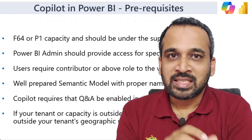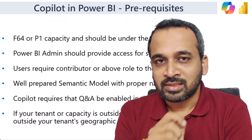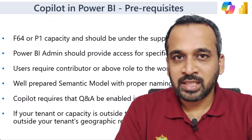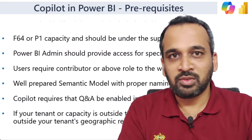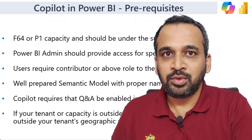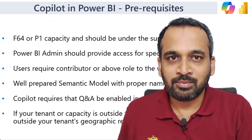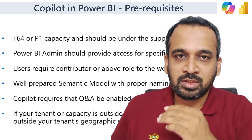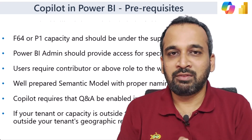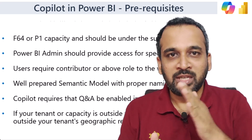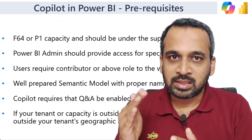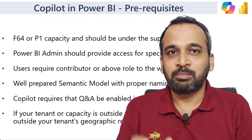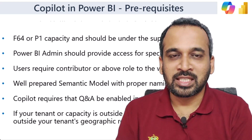There are some important prerequisites to know. The first is the F64 license. Microsoft is stopping the P-series licenses like P1 and P2. If you already have those on a long-term contract, it will continue. Otherwise, you need at least F64 to get started with Copilot. Fabric starts from F2, F4, but for Copilot you need F64, which equates to P1. P2 is equal to F128.